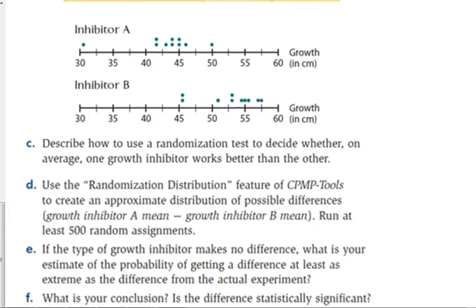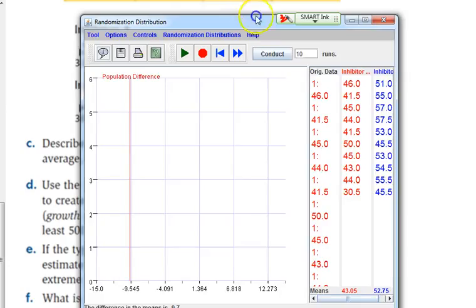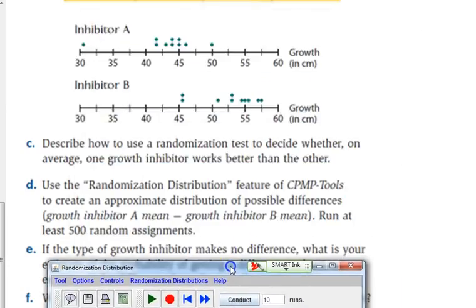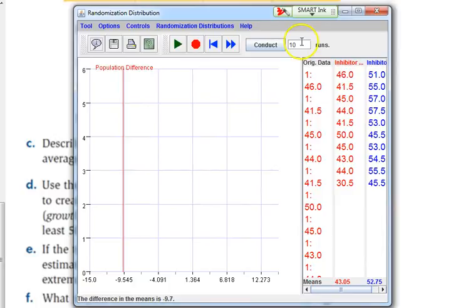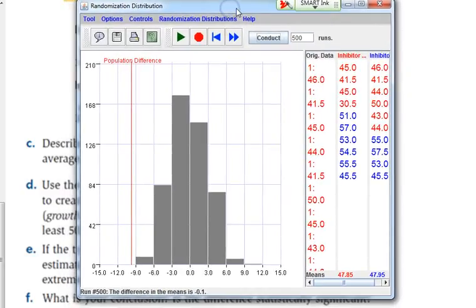Let's see if those results are actually statistically significant. So, I've got the randomization distribution here. What does it say? It says use 500 random assignments. So I'm going to put 500 in here, and I'm going to do that. Here's the data. Here is the actual difference in the population.